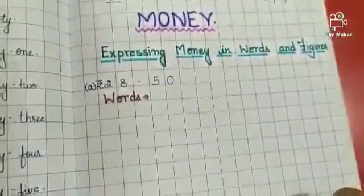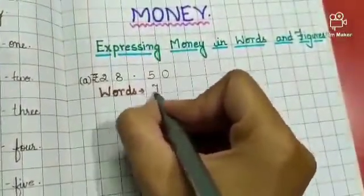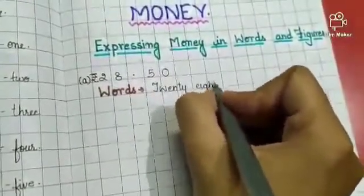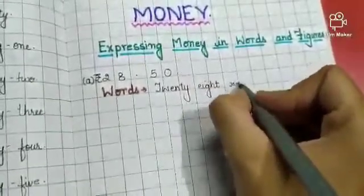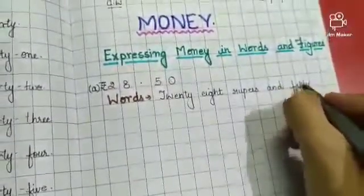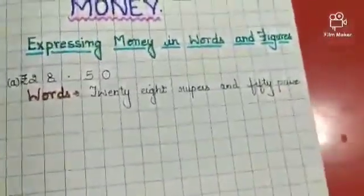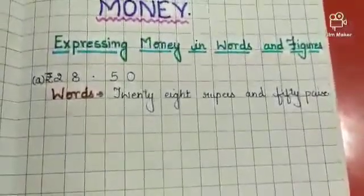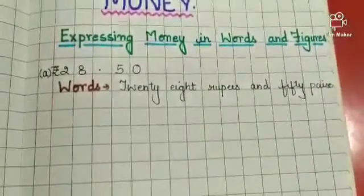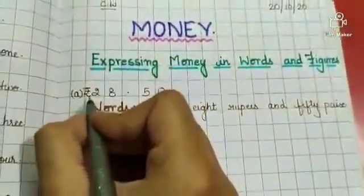Rs. 28 and 50 paise. In words, we write this as 28 rupees and 50 paise. To express this amount in figures, we make use of symbols. The symbol for rupees is this.